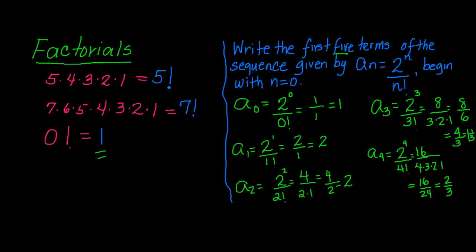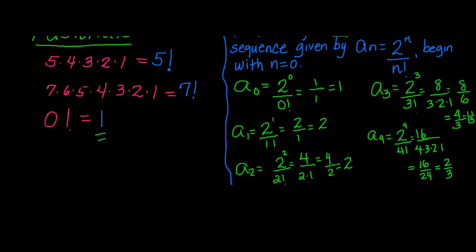So there are the first 5 terms of this sequence. We can list them. The first term is 1, the second term is 2, the third term is also 2, the fourth term is 1 and 1/3, and the fifth term is 2/3.